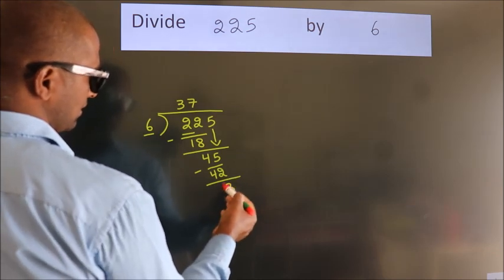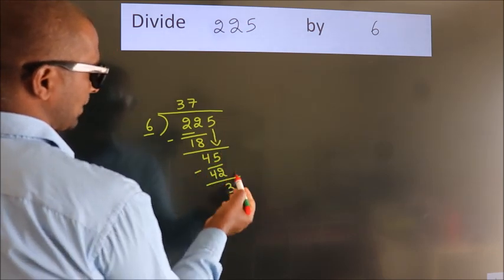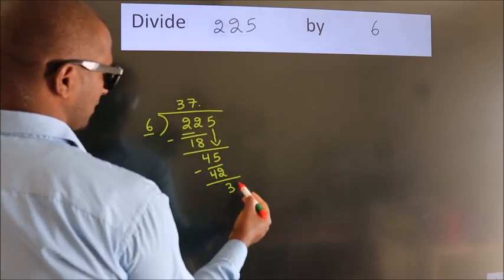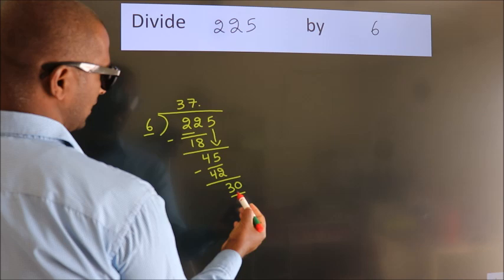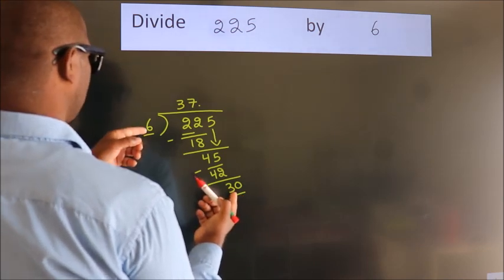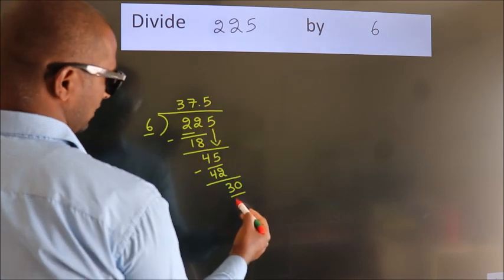After this, no more numbers to bring it down. So what we do is, we put dot take 0. So 30. When do we get 30? In sixth table. 6 fives 30.